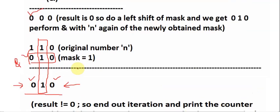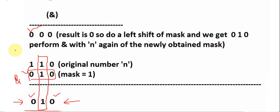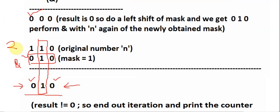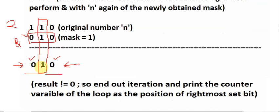We did two iterations to reach that result — this is the first iteration and this is the second iteration — so two is the final answer. That is the left shift operator method for finding the rightmost set bit position.